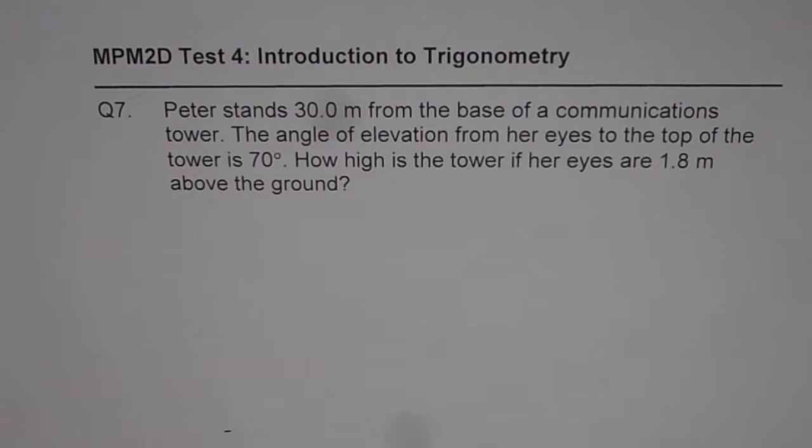Peter stands 30 meters from the base of a communications tower. The angle of elevation from her eyes to the top of the tower is 70 degrees. How high is the tower if her eyes are 1.8 meters above the ground?